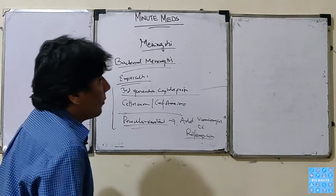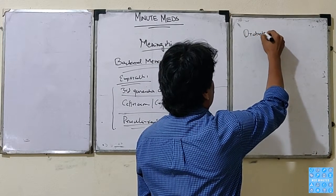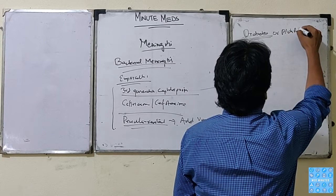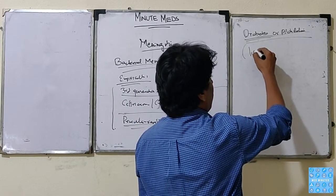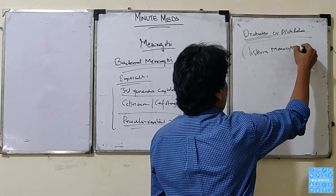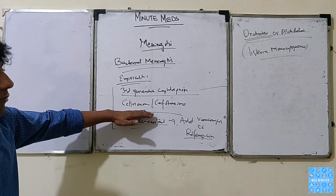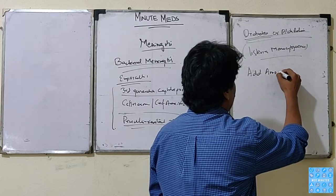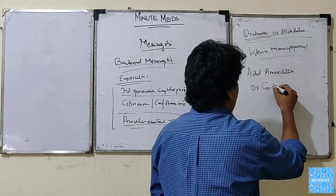If the patient has meningitis with a history of diabetes or alcoholism, we suspect or confirm from the culture report Listeria monocytogenes. Then we continue with the same empirical treatment of third-generation cephalosporin but we add amoxicillin or co-amoxiclav.